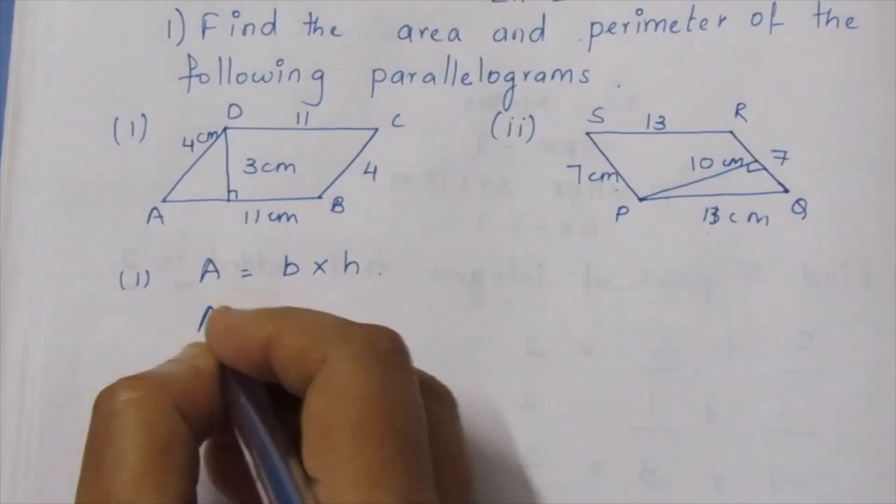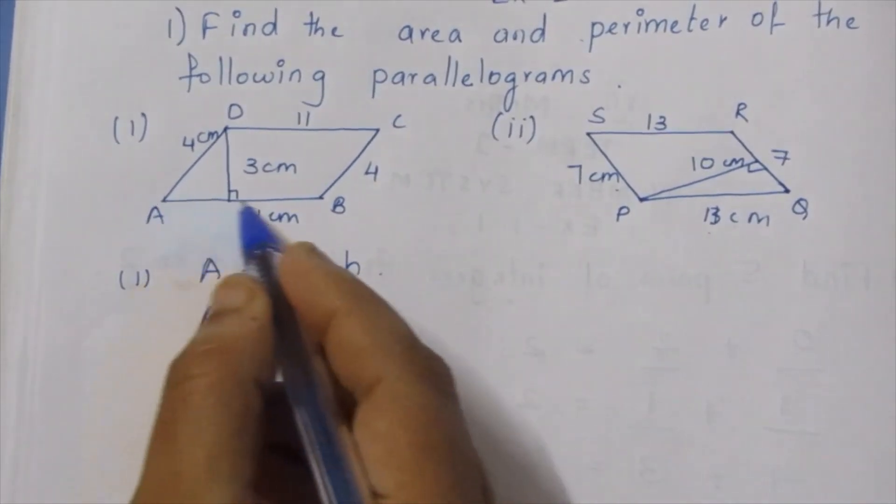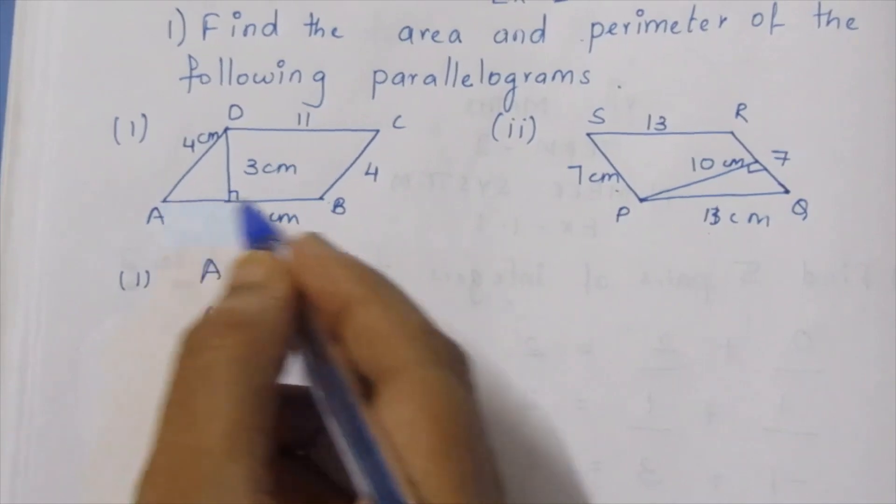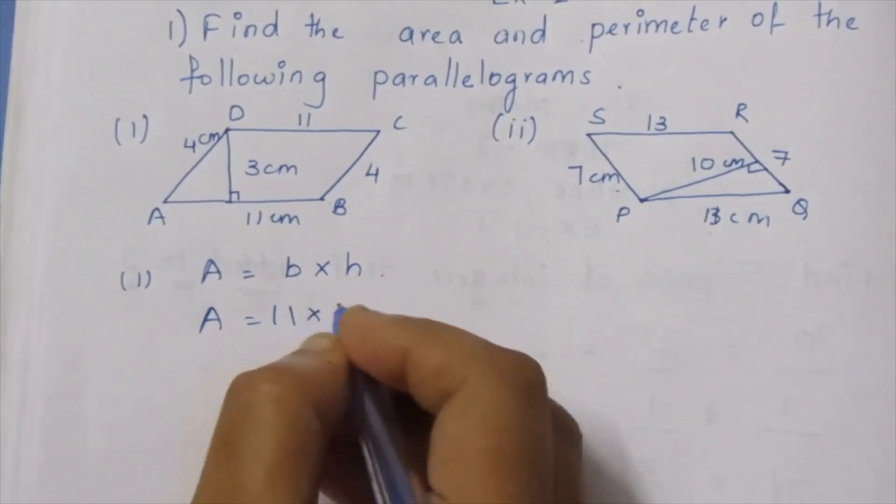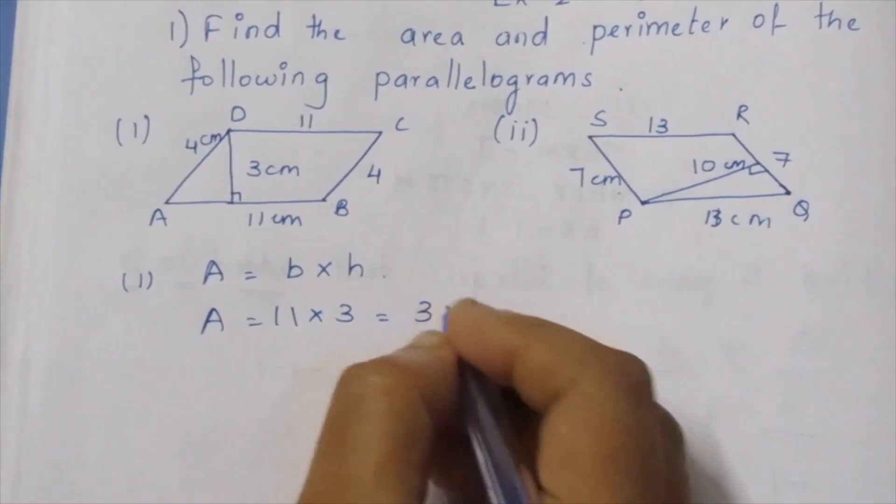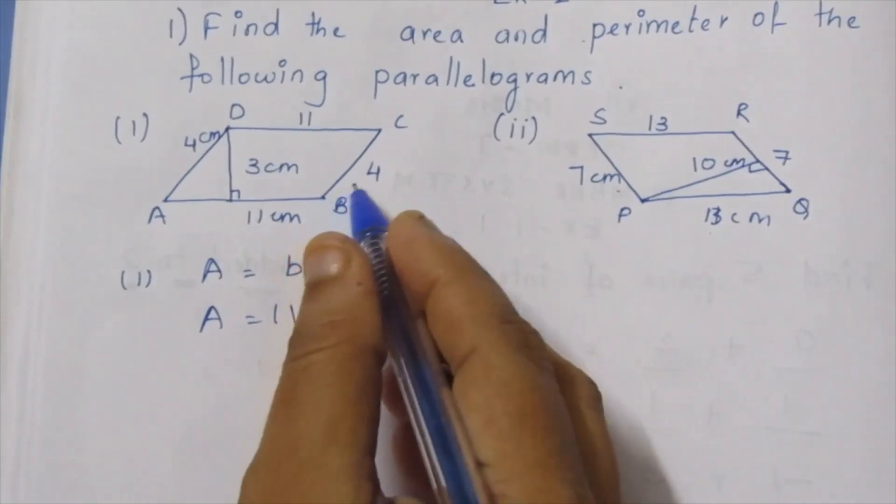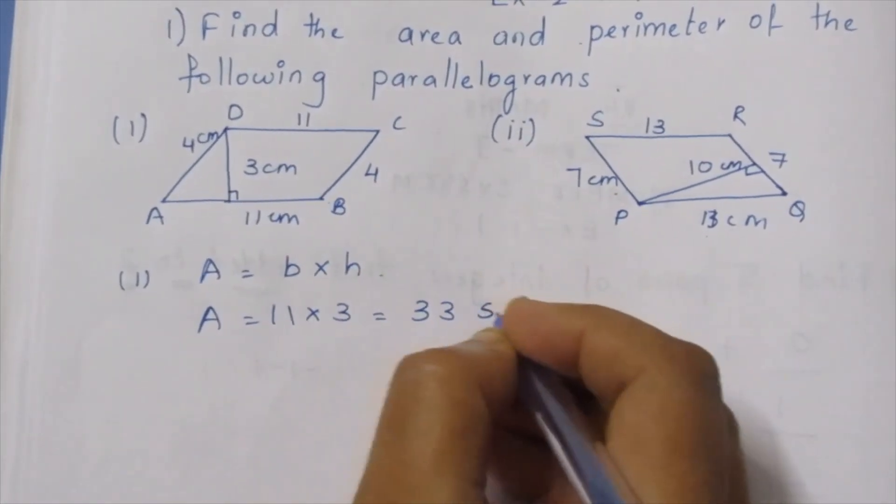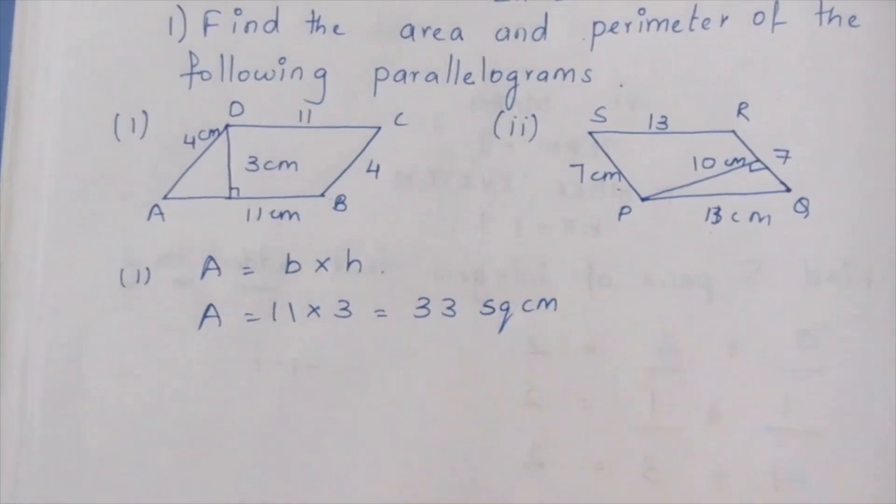Area is equal to base into height. This is base, in height this is 3. This is 33. Unit is square centimeter or centimeter square.